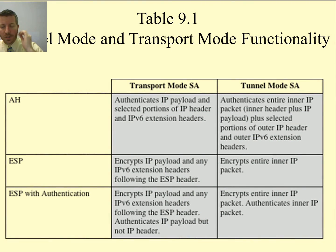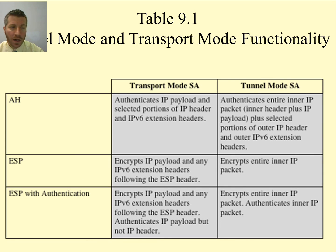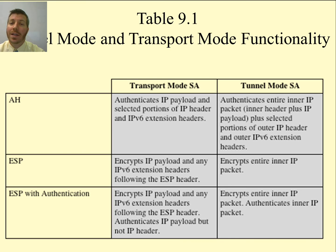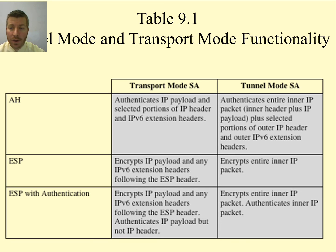Here is a comparison of transport mode and tunnel mode — a good slide to understand the differences. This includes how authentication header packets are transmitted as opposed to the encapsulated security payload, and the version with combined authentication. That gives an overview of IP security. Take a look at the referenced papers for more detail on how the routers process received packets and how the payload is decrypted before being sent back up to the transport layer.